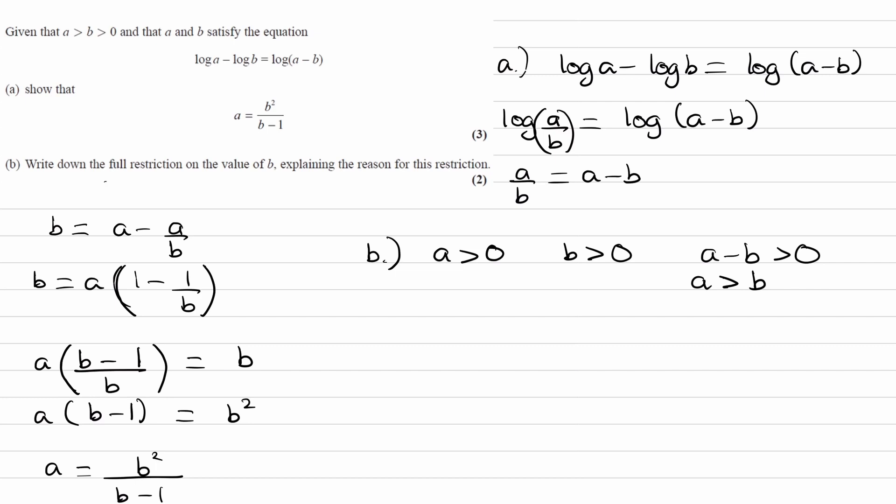Well, the new bit of information that we've worked out in this question is this: that A is equal to B squared over B minus 1. We know that A is positive. So if we know that A is positive, that also means that B squared over B minus 1 must also be positive. This is now our working. A is positive, therefore B squared over B minus 1 must be positive.